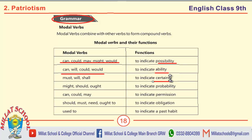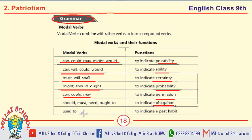If there is certainty in the sentence, then you will use must, will, and shall. For probability, we use might, should, and ought. For permission, we use the modal verbs can, could, and may. For obligation: should, must, need, and ought to. To indicate a past habit, if there is a past habit in the sentence, then you will use the modal verb used to.